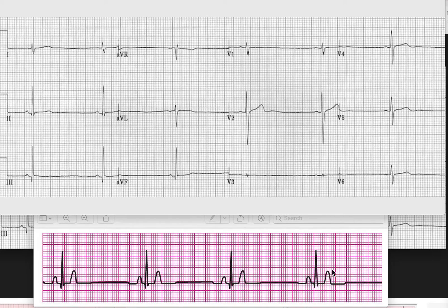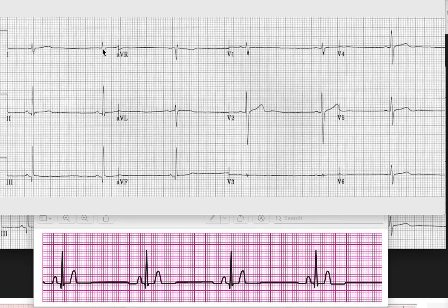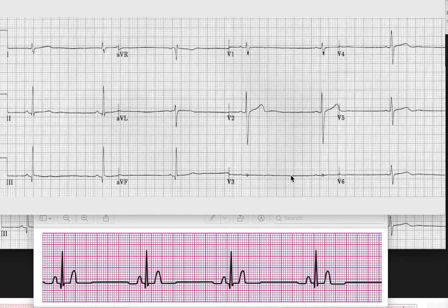This appearance may not be the same in every lead. If you look here, you see in lead 1, 2, and AVL, you are seeing an upright P-wave — this is also sinus bradycardia, and you can see how slow the heart rate is going. The P-wave in AVR is inverted. So it is upright in some leads and downward in AVR. It depends which lead you are looking at.